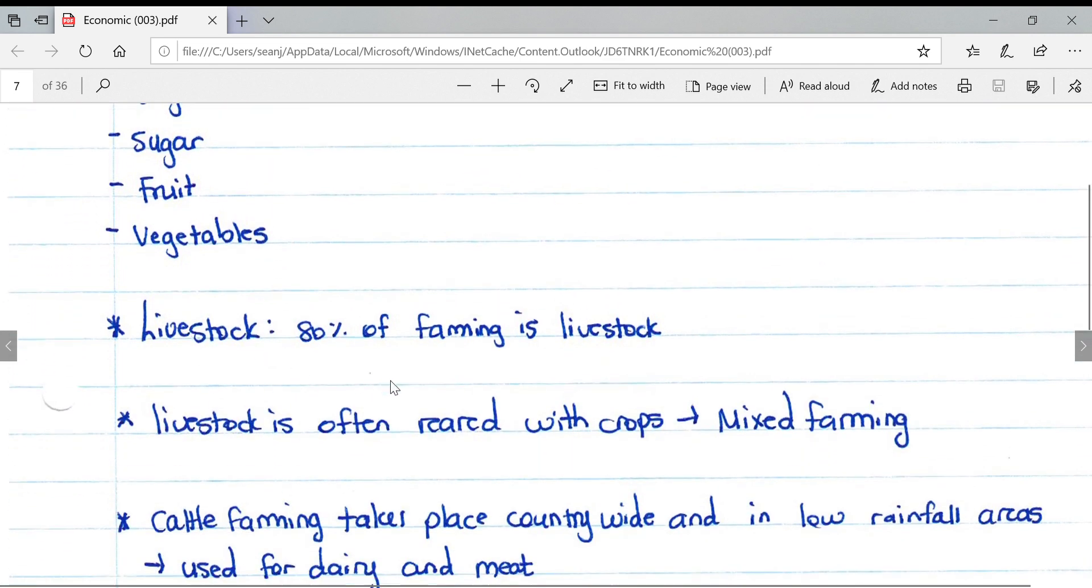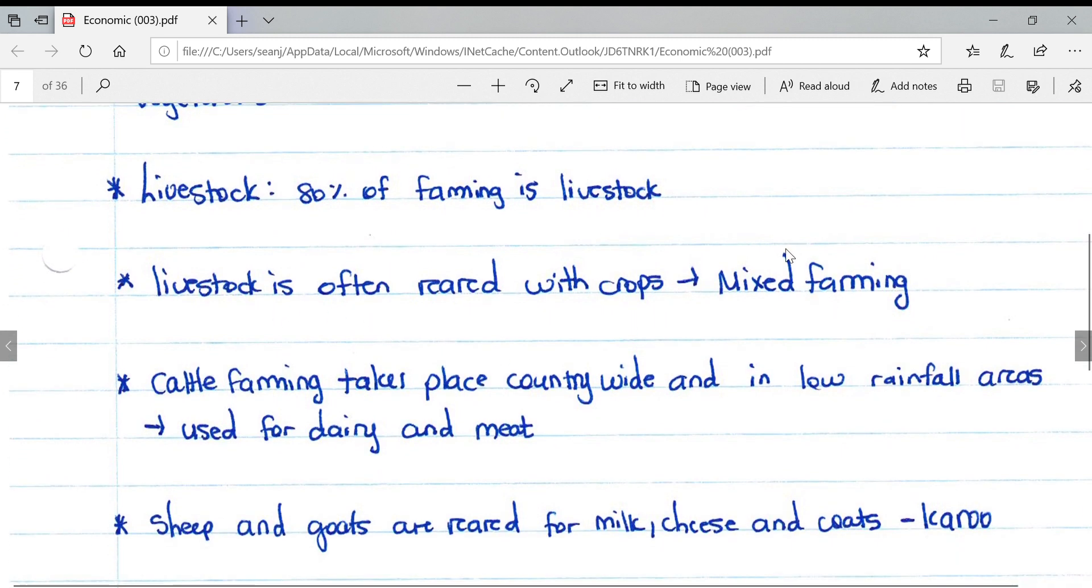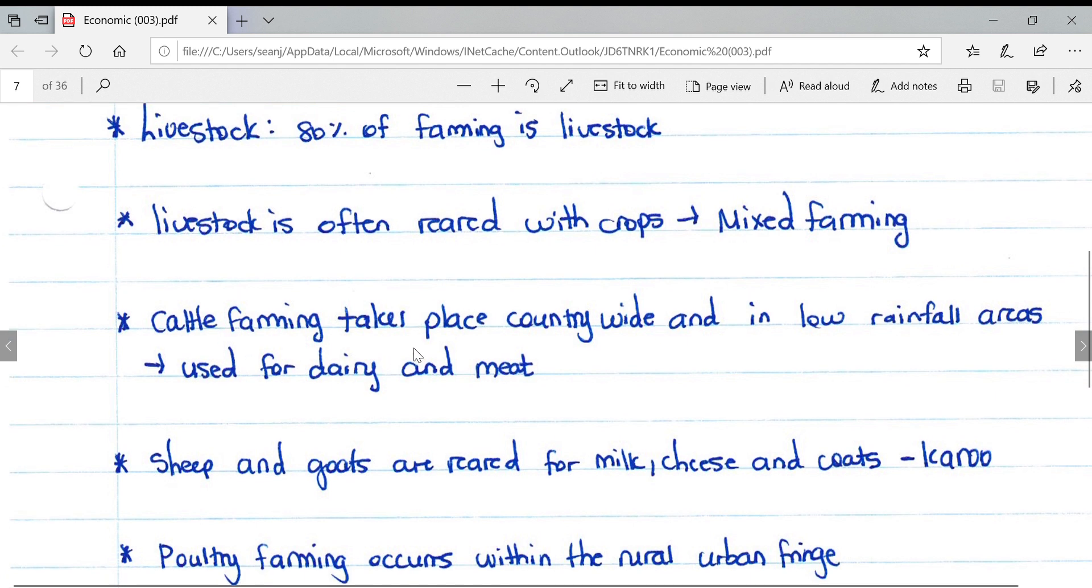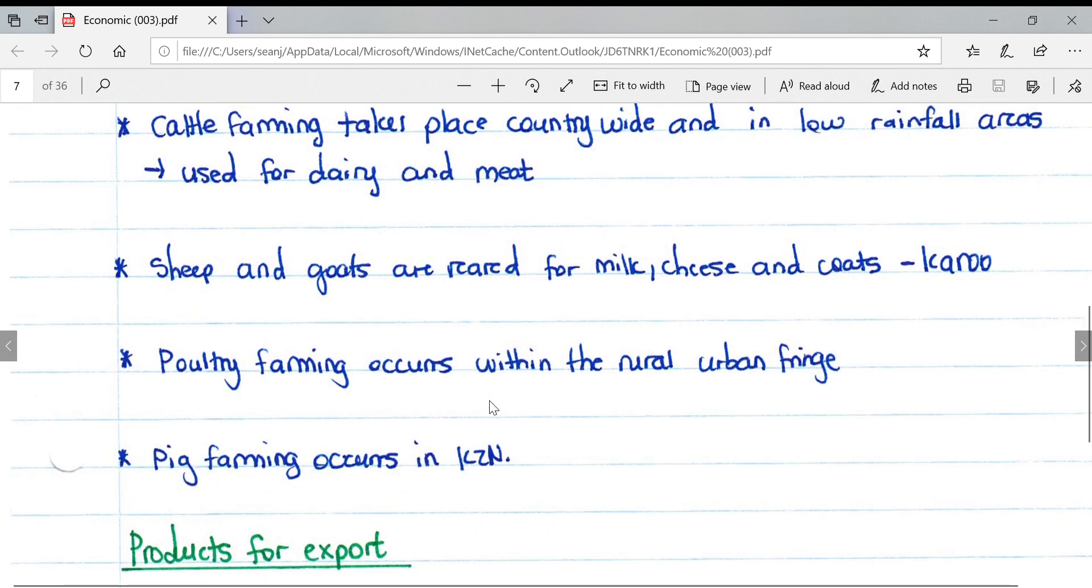For livestock, 80% of farming is livestock. Livestock is often reared with crops in a process called mixed farming. Cattle farming takes place countrywide in low rainfall areas, used for dairy and meat. Sheep and goats are reared for milk, cheese, and their coats, specifically in the Karoo area.